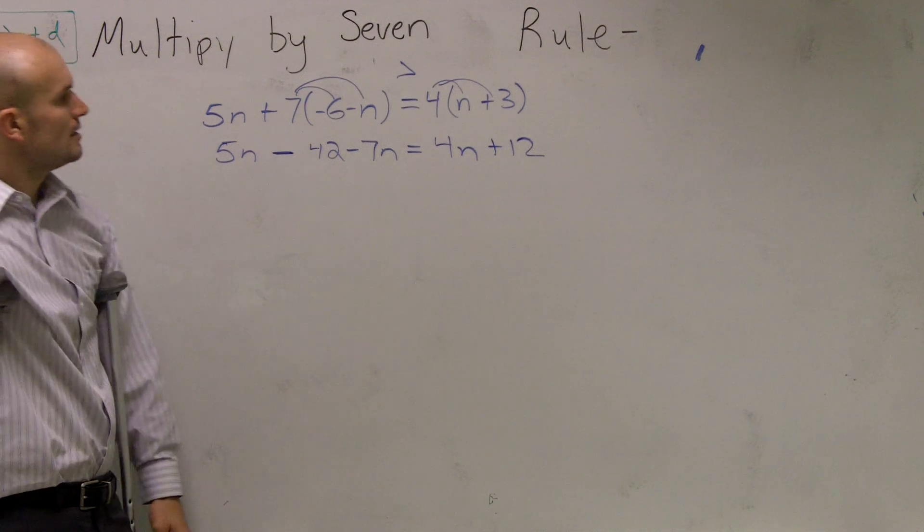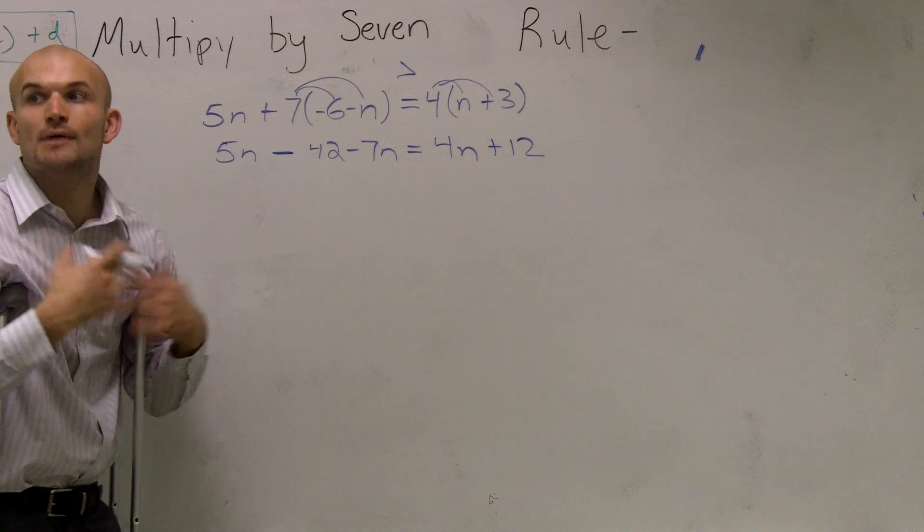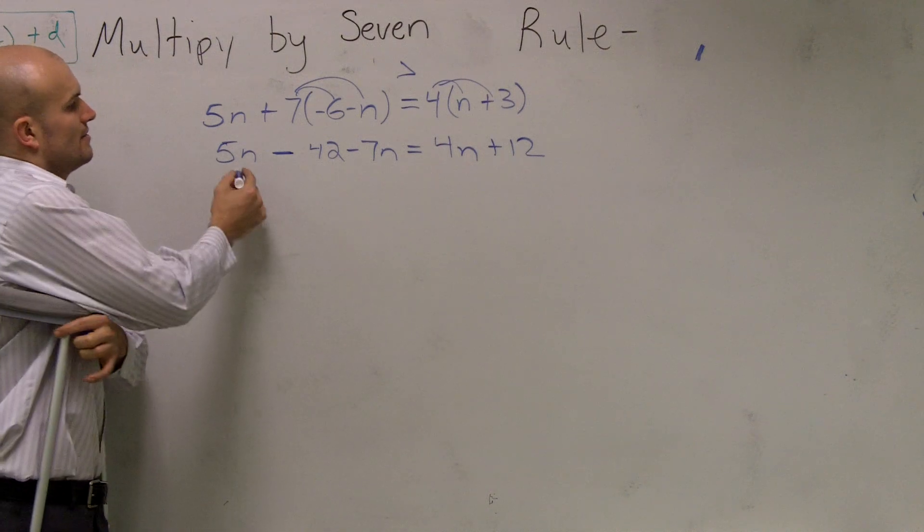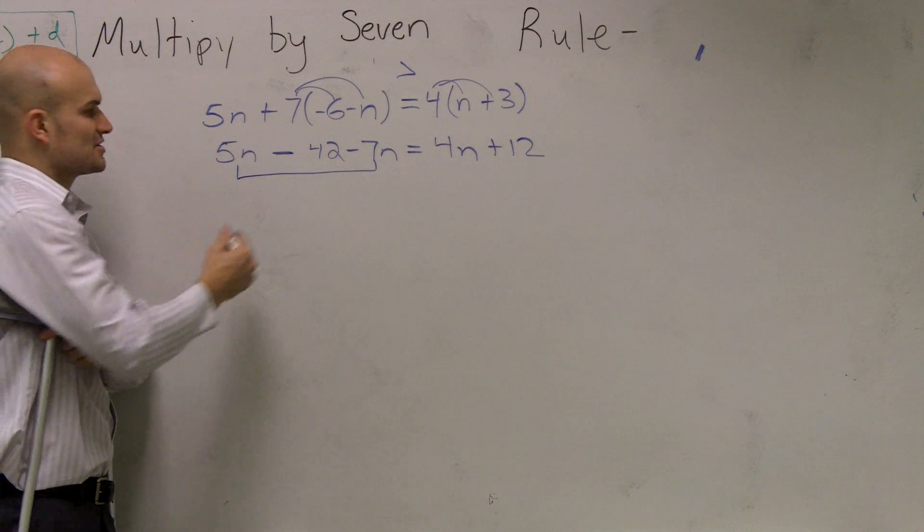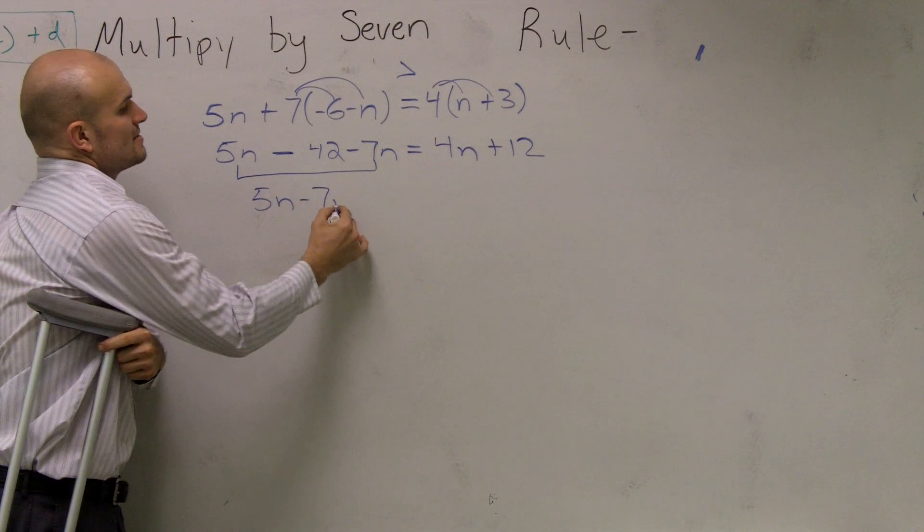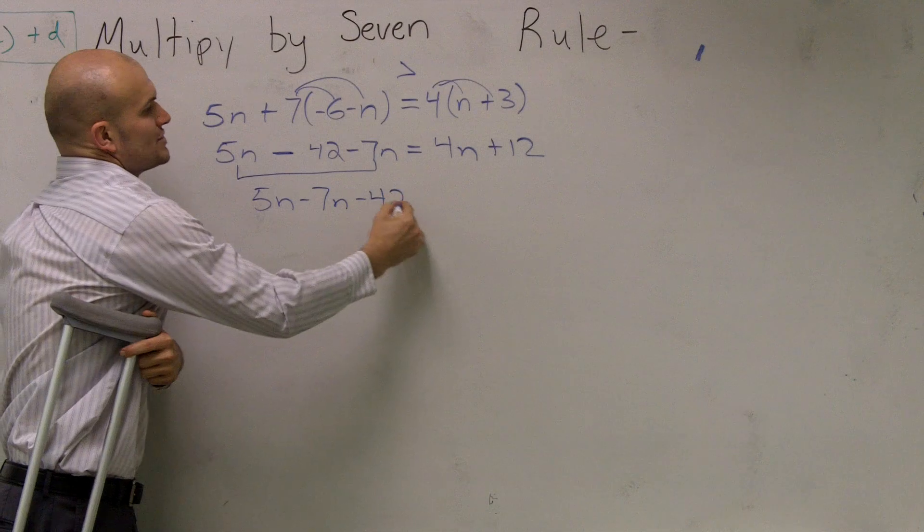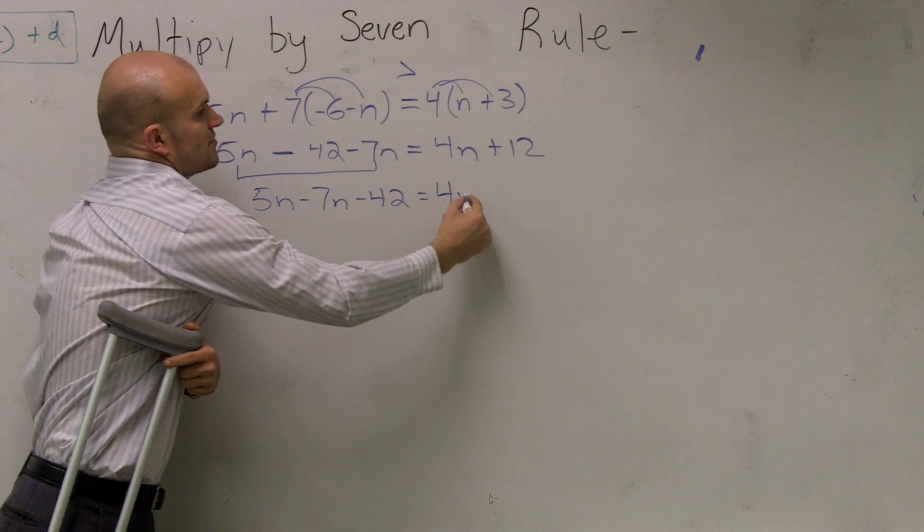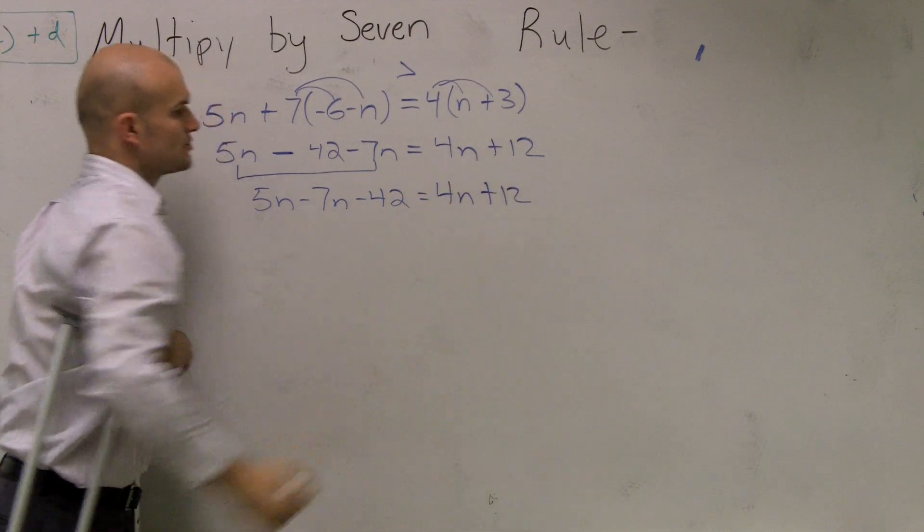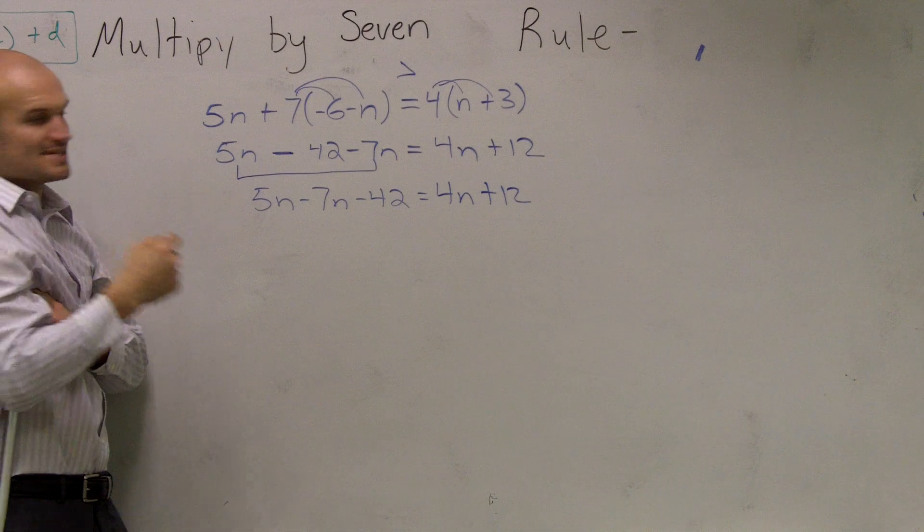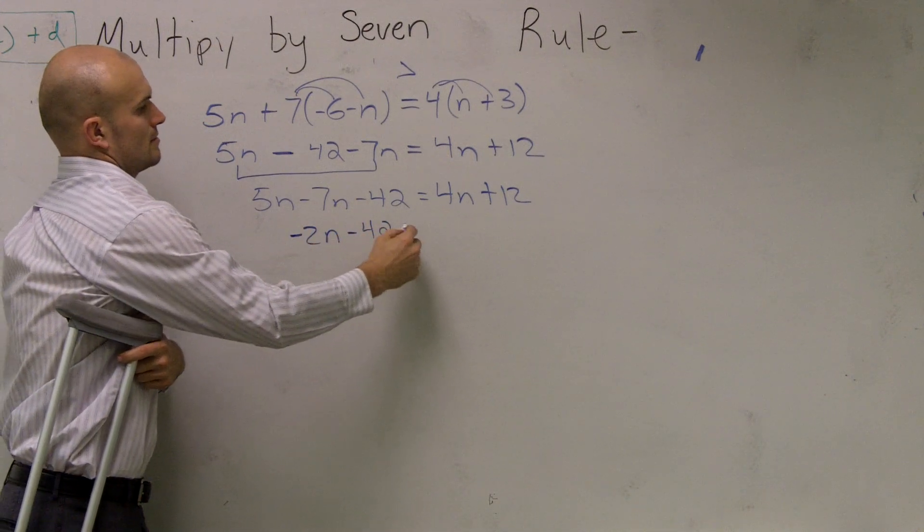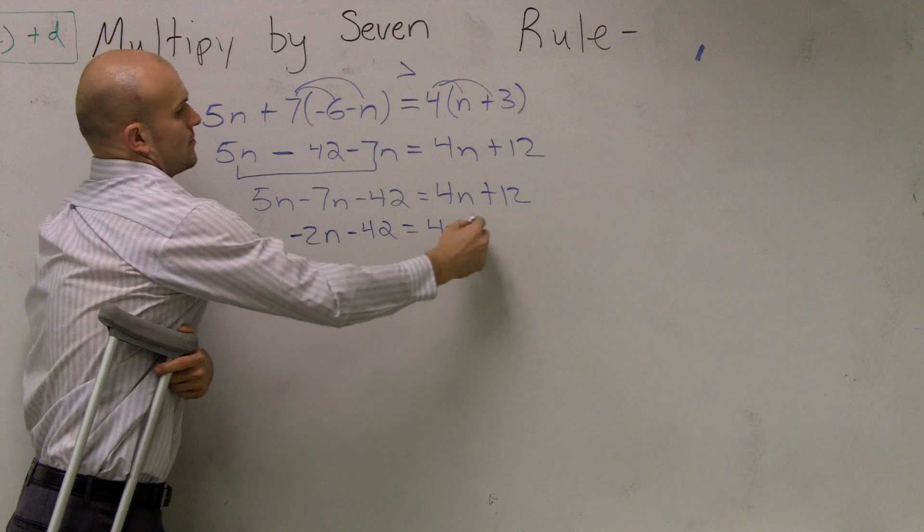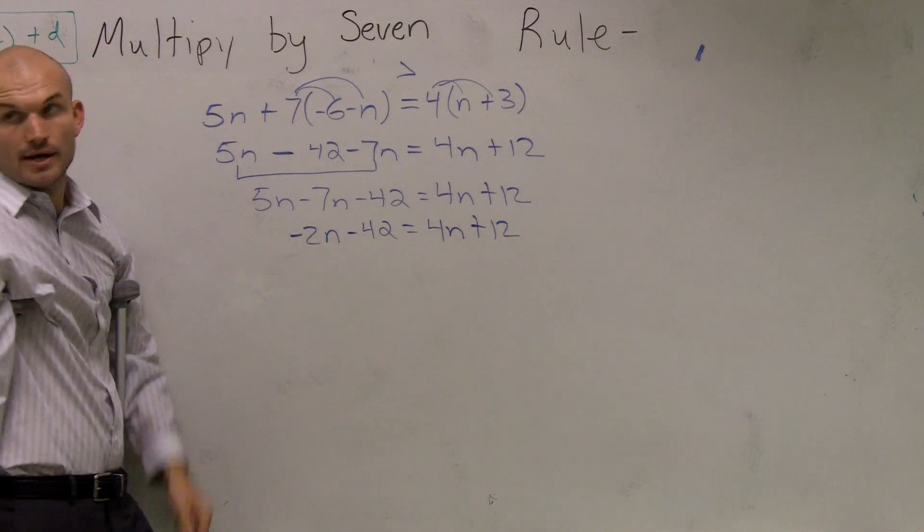Alright. So now, let's look at combining our variables on the same side. Now, since these are on the same side, I'm going to rewrite them next to each other. 5N minus 7N minus 42 equals 4N plus 12. Well, 5N minus 7N is a negative 2N. Right?